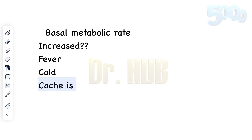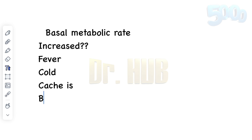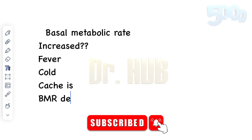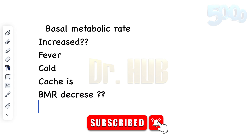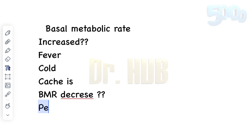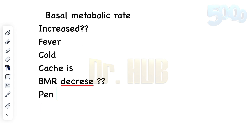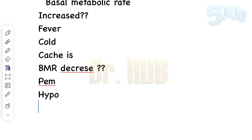Now where is the BMR decreased? BMR decrease is seen in cases of protein energy malnutrition, known as PEM, hypothyroidism, Addison's disease, starvation, as well as Cushing syndrome.